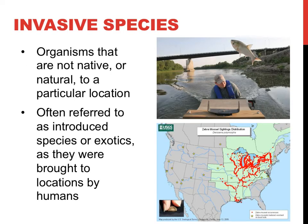Invasive species are organisms that are not naturally found in a particular area — they are not what are referred to as native species. These invasive, or sometimes referred to as exotic or introduced species, were often brought to different locations by humans, by accident, or as pets. Snakes are not native to Hawaii, but when brought to the state as pets and released, they have decimated bird, bat, and lizard populations, costing the state a projected $123 million.